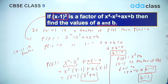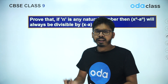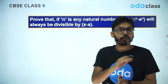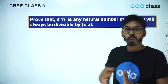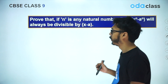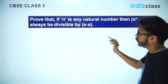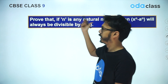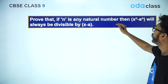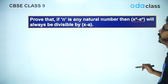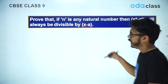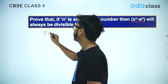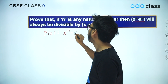Now let's move to the next question, which can also be taken as a theorem you can apply to different questions. The theorem to prove is: if n is any natural number, then x^n - a^n is always divisible by (x - a). Let F(x) = x^n - a^n. If we substitute x = a, we get F(a) = a^n - a^n = 0.